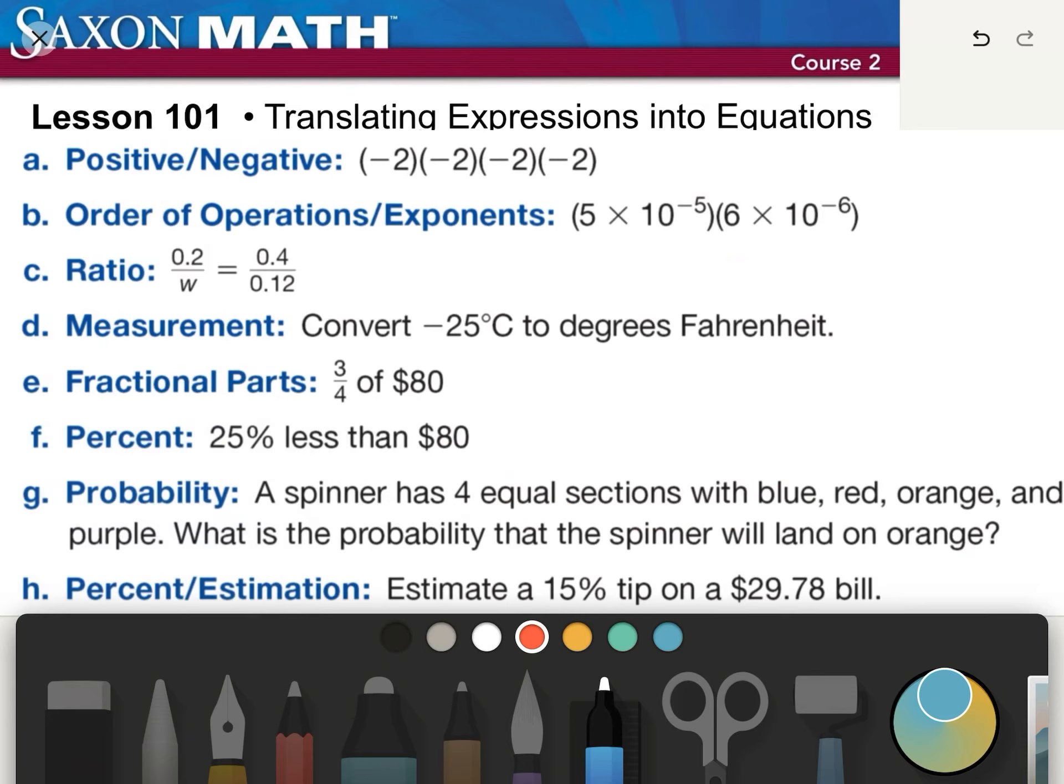Probability. A spinner has four equal sections with blue, red, orange, and purple. What is the probability the spinner will land on orange? Well, that's one-fourth of the spinner, isn't it? So we could say it has a one-in-four chance.